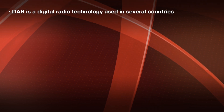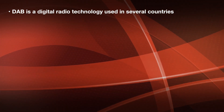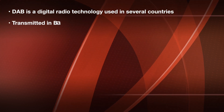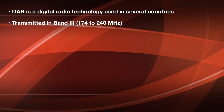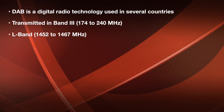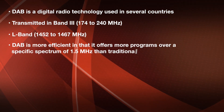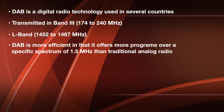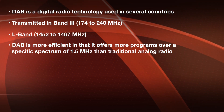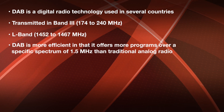DAB is a digital radio technology for broadcasting audio and multimedia services used in several countries, particularly in Europe. DAB is transmitted in Band 3, 174 to 240 MHz, and the lesser-used L-band, 1452 to 1467 MHz. DAB is more efficient than traditional analog radio in that it offers more radio programs over a specific spectrum of 1.5 MHz, carrying a multiplex of around 15 services. DAB, just like DRM, is also robust with regard to noise and multipath fading for mobile listening.